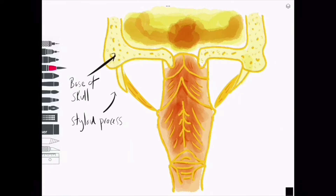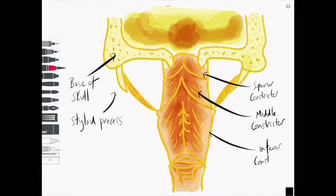We can divide the muscular layer of the pharynx into two: the circular outer layer and the longitudinal inner layer. This video will address the outer three muscles, called the superior, middle, and inferior pharyngeal constrictors.